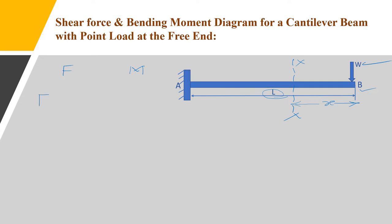The shear force at the XX section, written as FX, is the resultant force acting on the right portion of the given section. In this case, the only force is W acting downward. By sign convention, if the right portion acts downward, that is positive. So FX equals +W. The shear force is constant at all sections between B and A because there is no load between them.